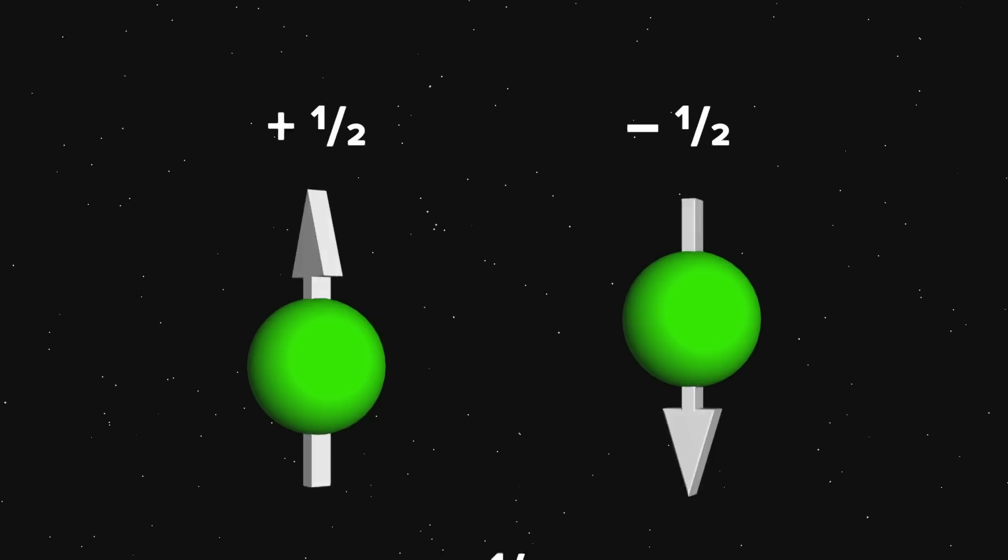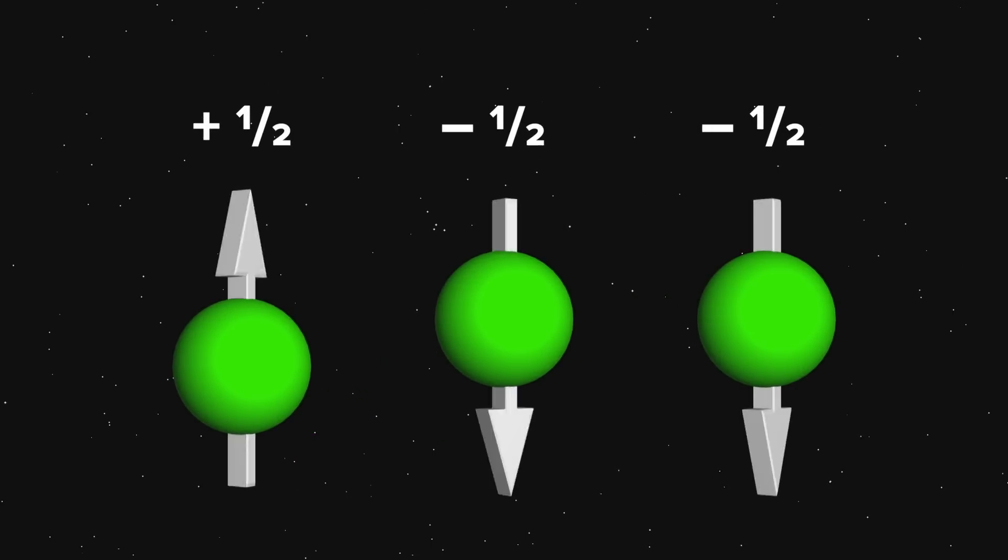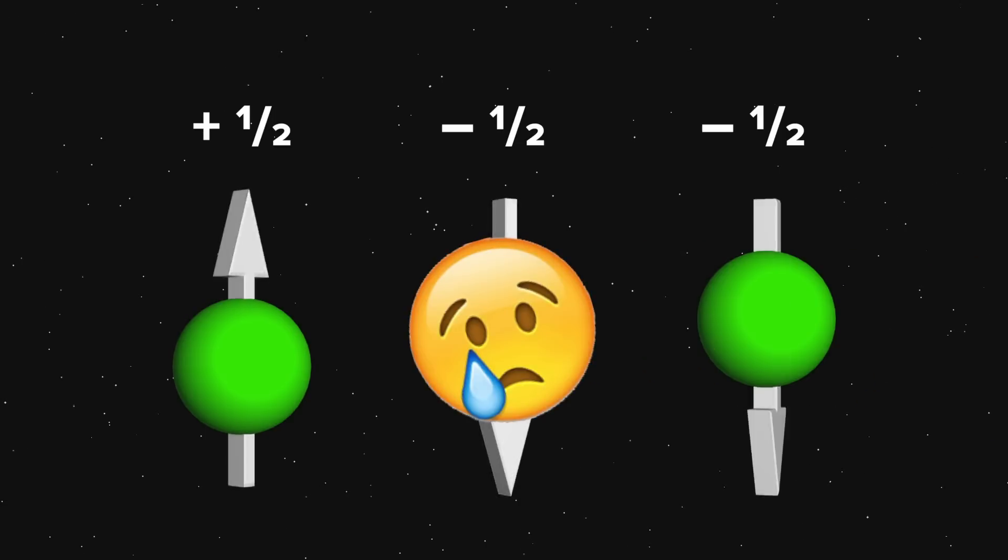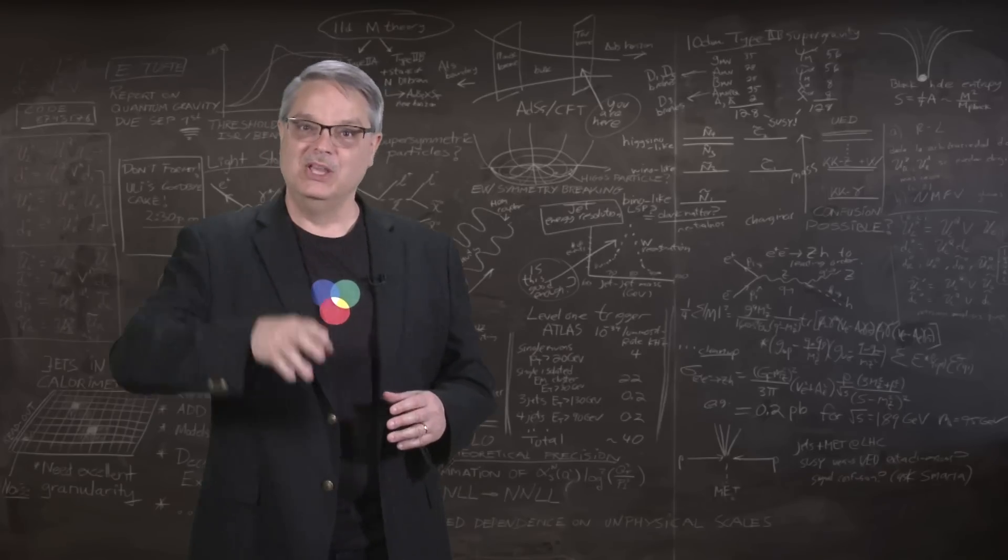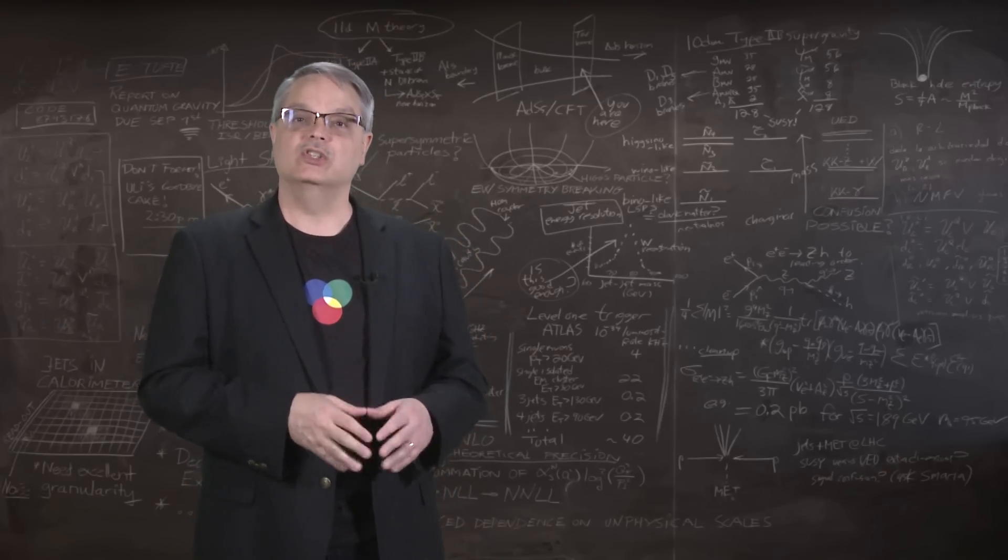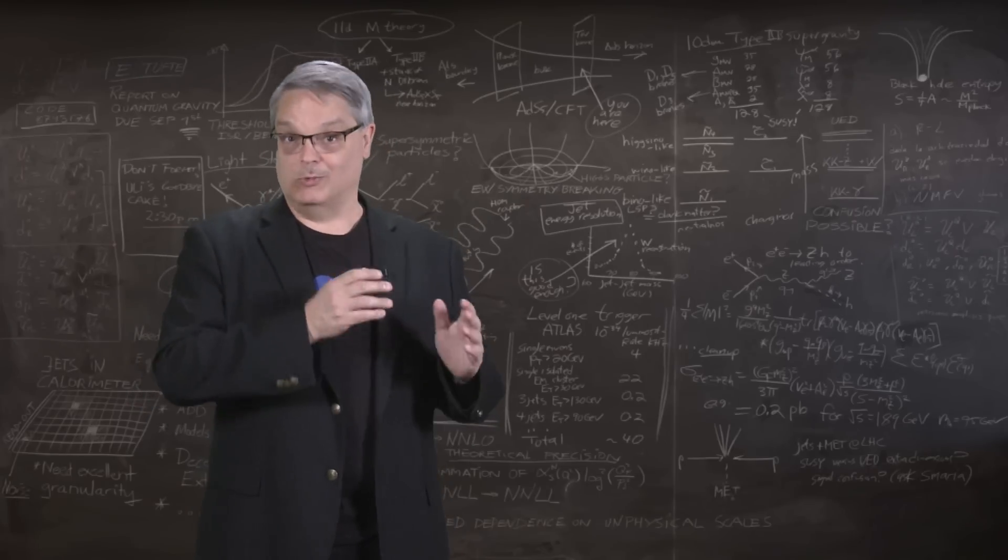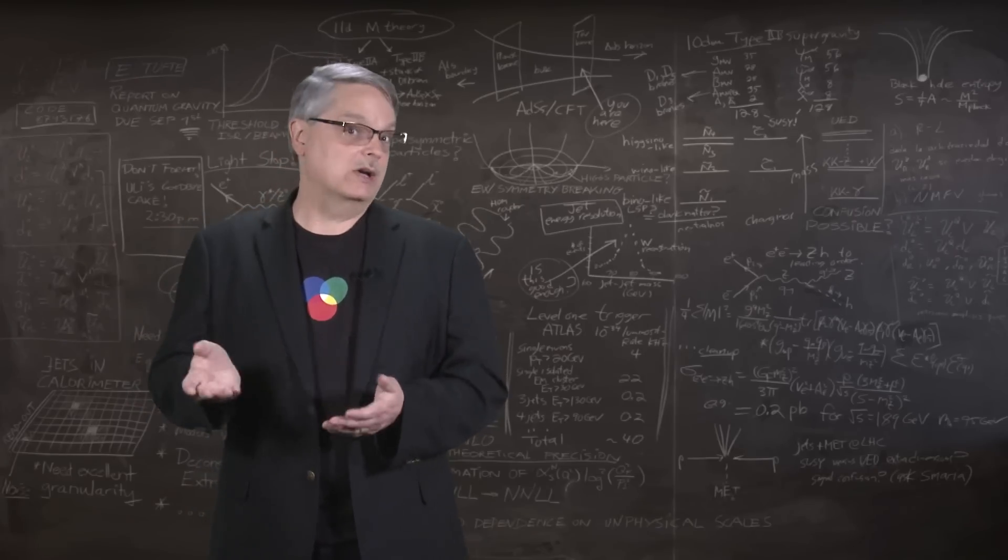But now, let's add the third up quark. No matter if it's a spin plus a half or minus a half, it will duplicate the spin of an existing quark. And according to Pauli's principle, such a particle cannot exist. Yet they do. With the discovery of the omega minus, all the possible configurations of three quarks in a baryon had been found. So either the quark idea was wrong, or someone needed to work out an answer.